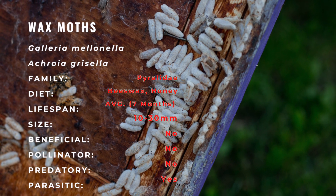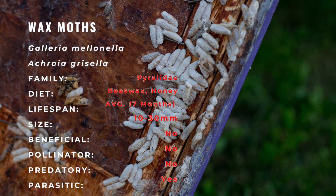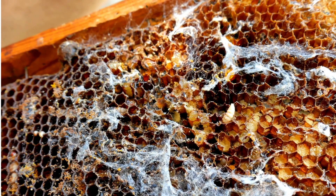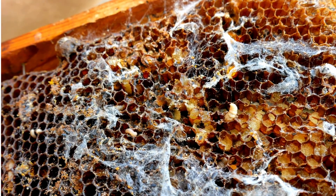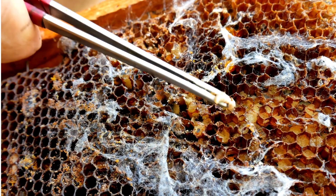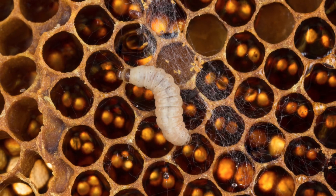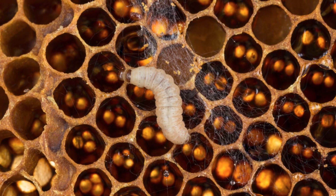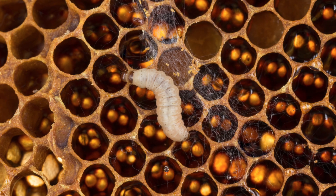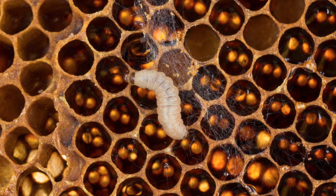The life cycle of both species of wax moth consists of four stages: eggs, larvae, pupae, and the adult moths. The development of each stage depends significantly on environmental factors, particularly temperature. A female wax moth starts laying eggs immediately after mating and continues for approximately five days, laying between 300 and 600 eggs in batches in dark, out-of-the-way places. It takes between three to five days for the eggs to hatch.